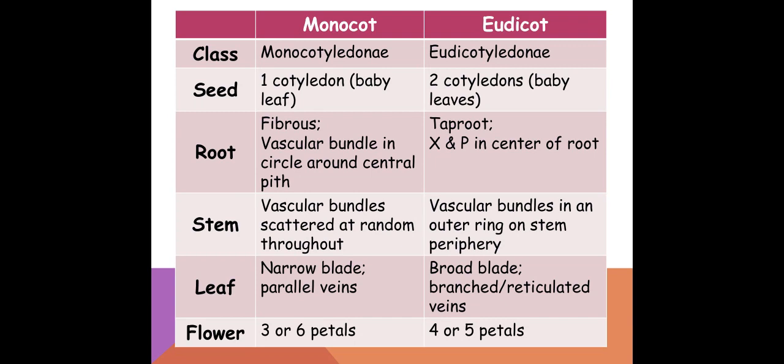Our dicots will have two cotyledons, or seed/baby leaves. They will have a taproot system with xylem and phloem in the center in a little star or X shape. Their vascular bundles are going to be in a ring around the outer part of the stem. They have broad leaves with branched or reticulated veins — sort of like a river delta. They have four or five petals, or multiples of four and five. Most trees you'll see outside, like an oak tree or a maple tree, are good examples.